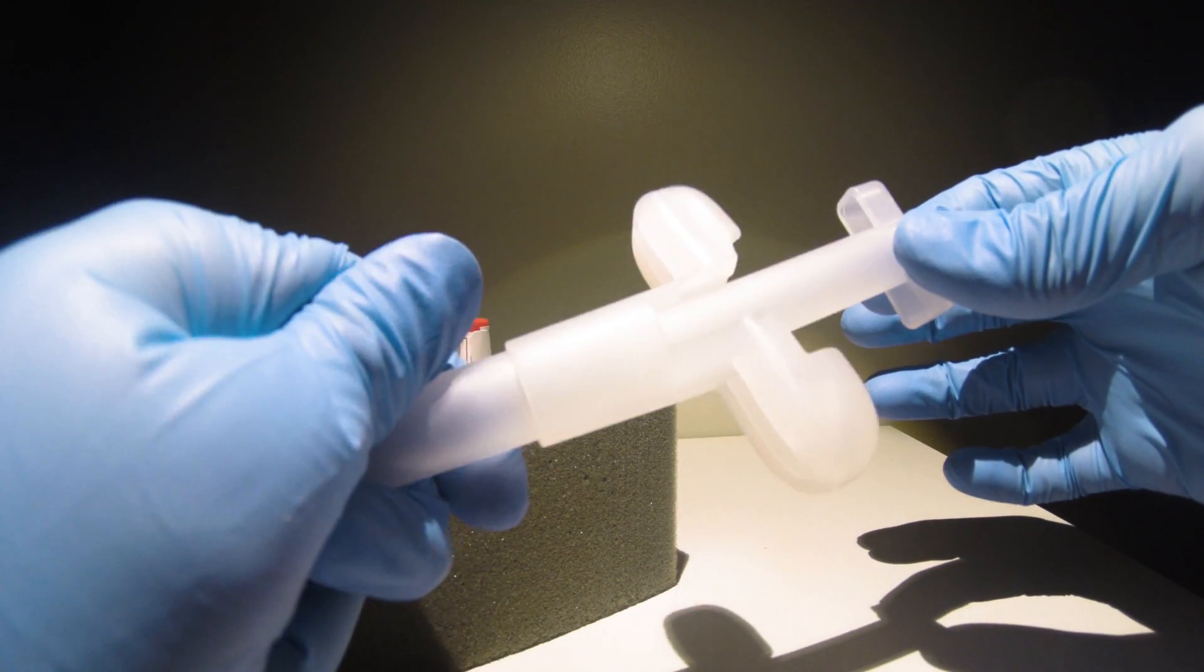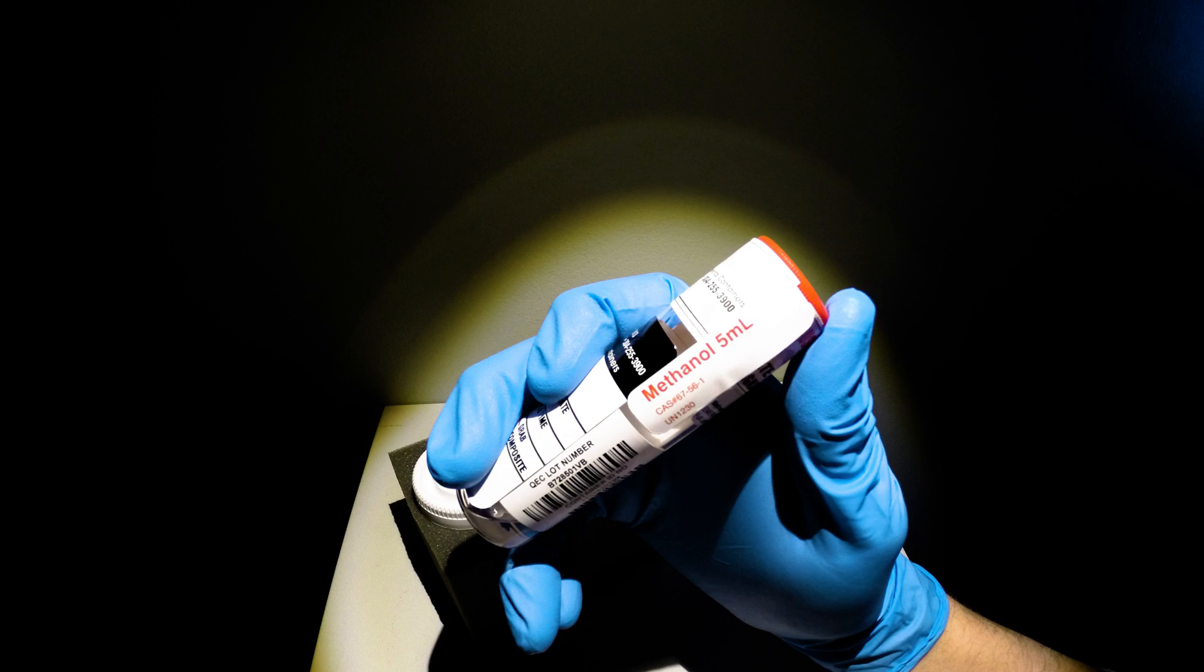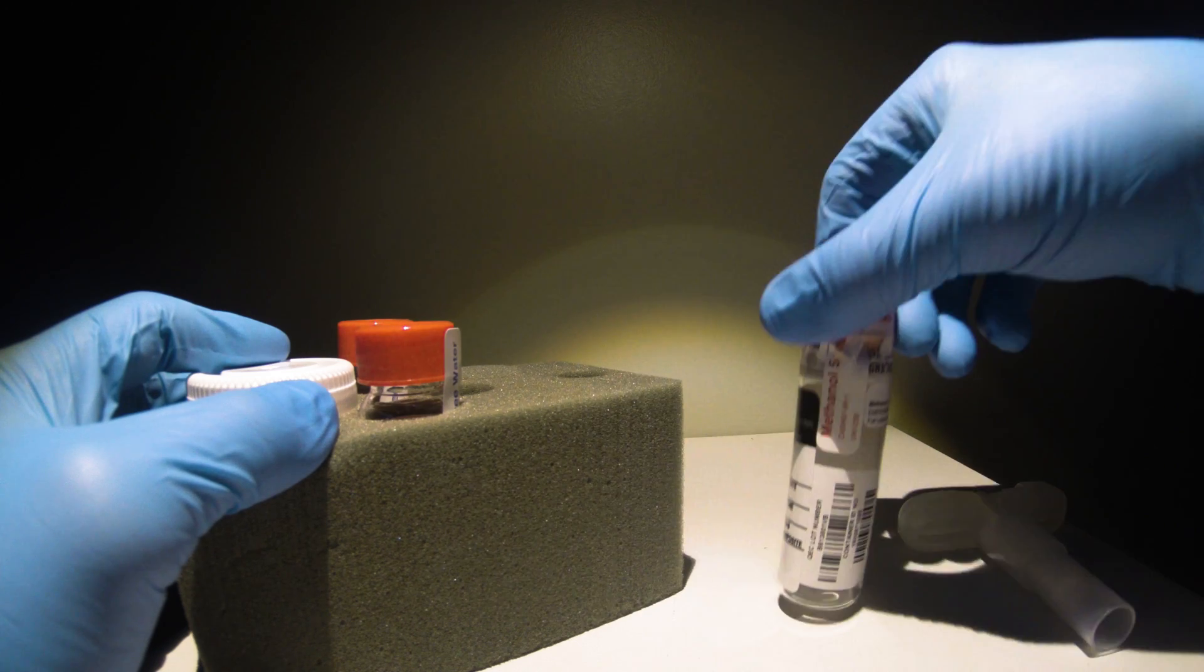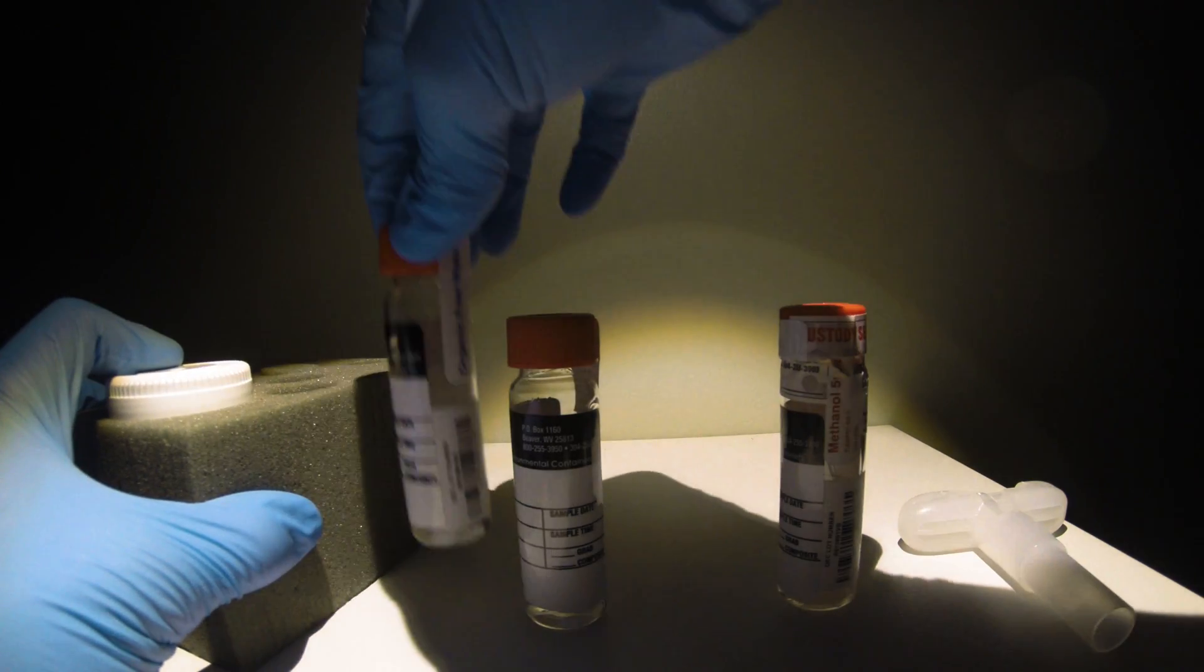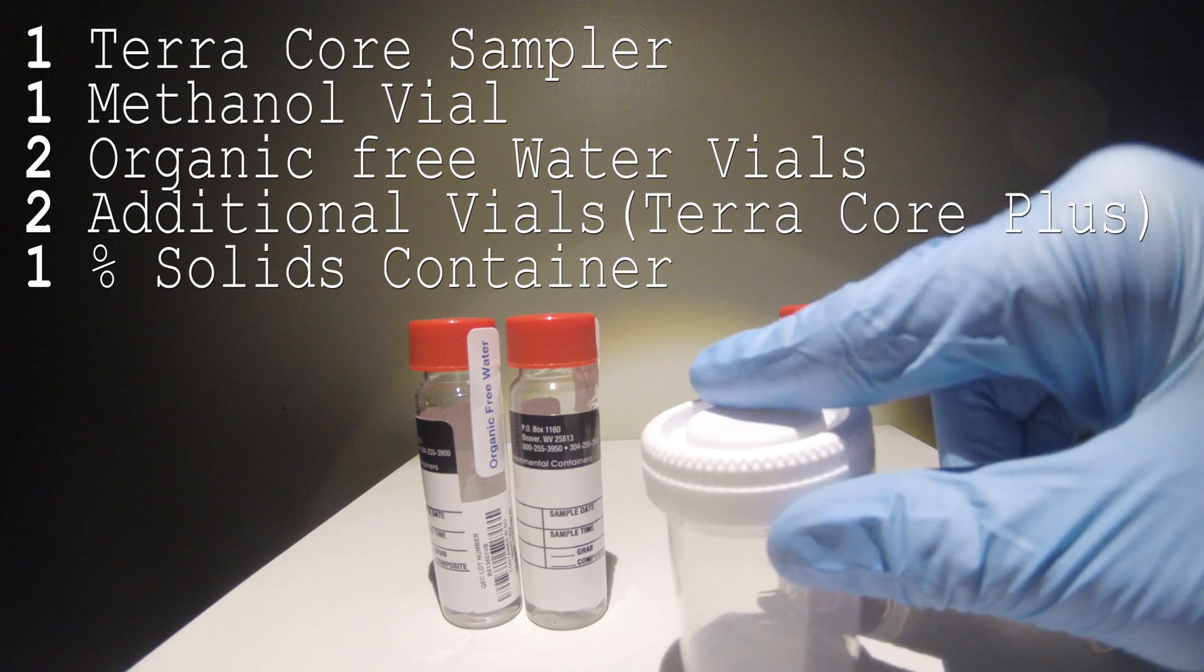Your kit should include one TerraCore sampler, one vial containing methanol, two or four vials containing organic free water, and a container for percent solids.